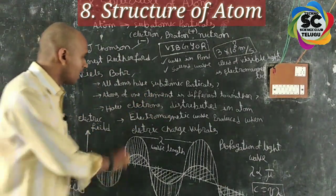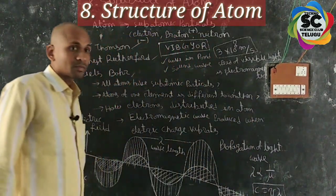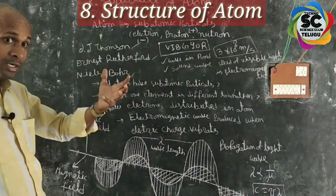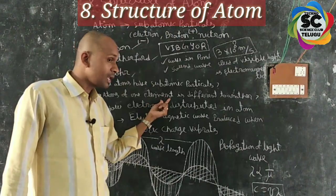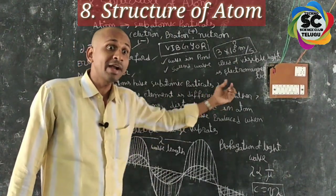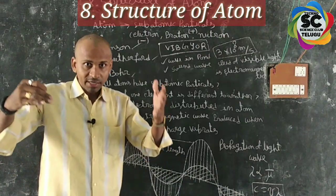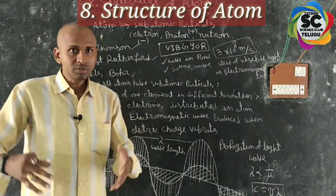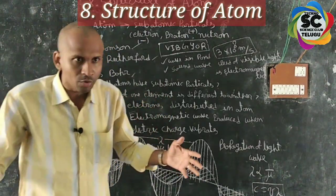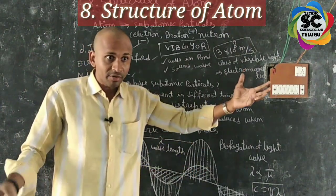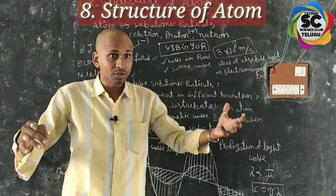Atoms of one element are different from atoms of another element. Each element has atoms with different numbers of electrons, protons, and neutrons. The atoms of two different elements have different numbers of these subatomic particles.